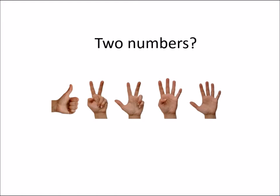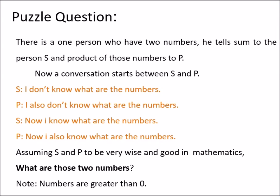Hello friends, this is Ajay. I will explain a new puzzle about two numbers. The puzzle question is: there is a person who has two numbers. He tells the sum to person S and the product to person P. Now a conversation starts between S and P, and based on the conversation, you have to find out what are those two numbers.